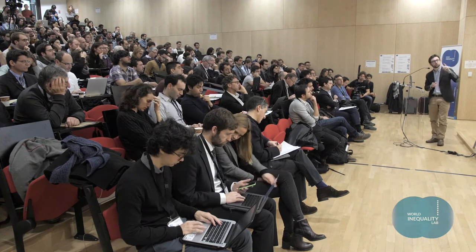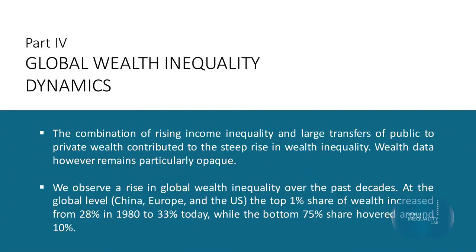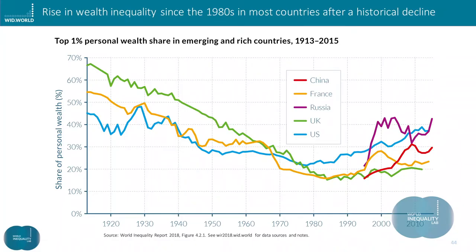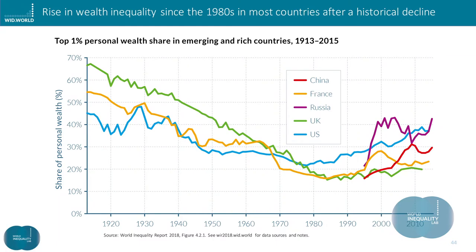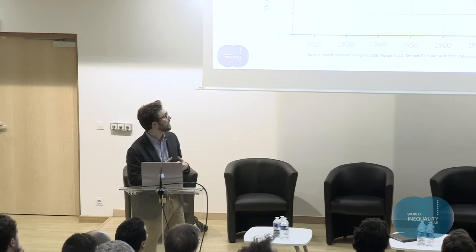Here, grouping together China, Europe, and the US, we see a rise in wealth inequality among individuals, with the top 1% share of wealth increasing from 28% in 1980 to 33% today, while the bottom 75% oscillated around 10%. Indeed, wealth is much more concentrated than income. Looking at country-by-country trajectories with a long-term perspective, we see the decline in wealth inequality from the early 20th century to the 1980s, and the rise afterwards. The rise happened at different speeds — very fast and abrupt in Russia, very important and progressive in the USA, and more moderate in UK and France.